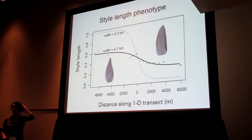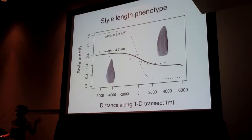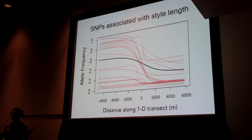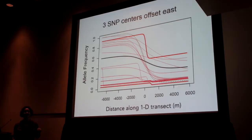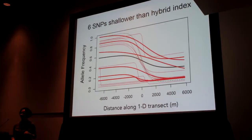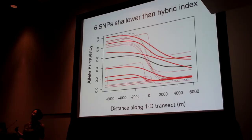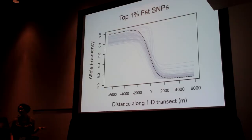This wider phenotypic cline looks like strong selection is not happening. But depending on the genetic architecture, strong selection could be masked. So let's look at the SNP clines. They're all over the place — we have three clines significantly offset to the west, three offset to the east, and six clines significantly shallower than the hybrid index cline. So the story in this hybrid zone is not that selection on style length is the most important thing maintaining species differences. When we look at the clines for the most significantly differentiated SNPs — the highest FST SNPs — they're a great match for the genome-wide average. So there is strong selection maintaining this hybrid zone, it just doesn't seem to be on style length.